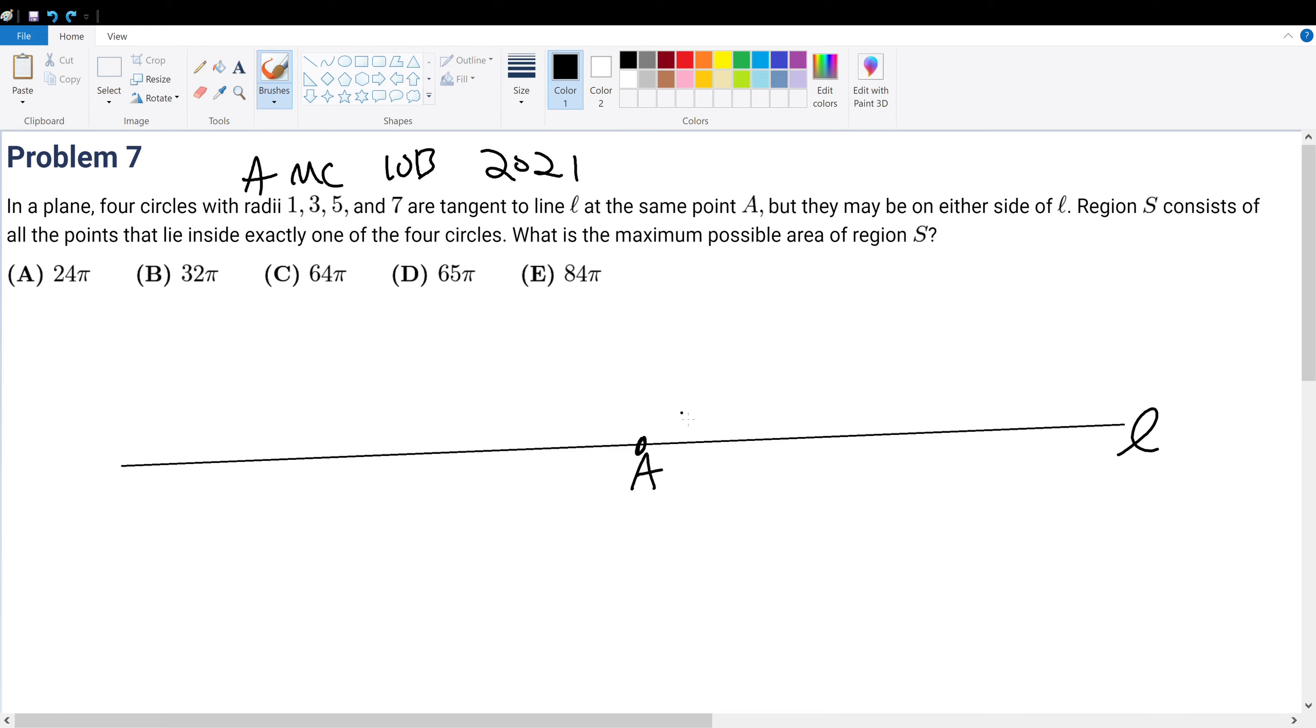So we want to find the maximum amount of area. Obviously, if you want the maximum amount of area, then that means we want to preserve the area within the largest circle. So first, what does it mean that region S consists of all the points that lie in exactly one of the four circles? That means if I have a simpler case of one circle inside a larger circle, it can either be the area here, or it can be the area surrounding it. These are the two possible cases, and if we apply more circles within it, you get the idea of how we get the area.